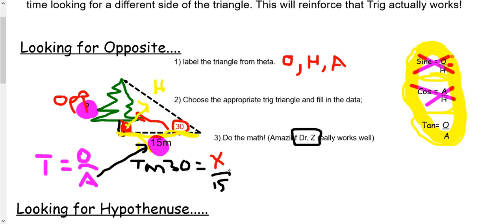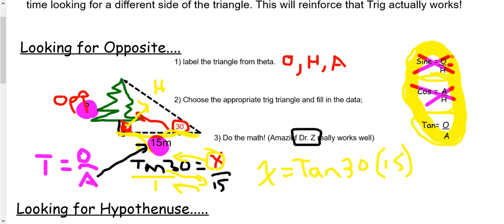Remember, Amazing Dr. Z: the unknown is equal to the one across if you multiply the corners and divide by the last. So here it'll be over 1, because every number can be written over 1. If we rewrite this, we'll have X is equal to tan 30 times 15 divided by 1.